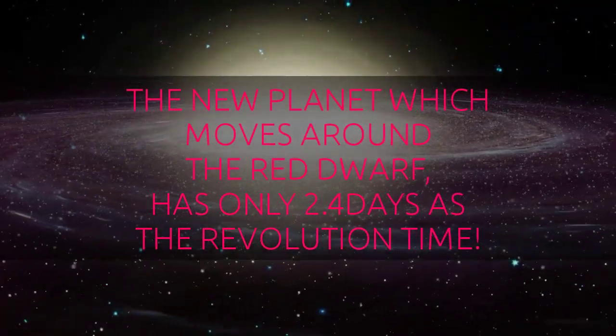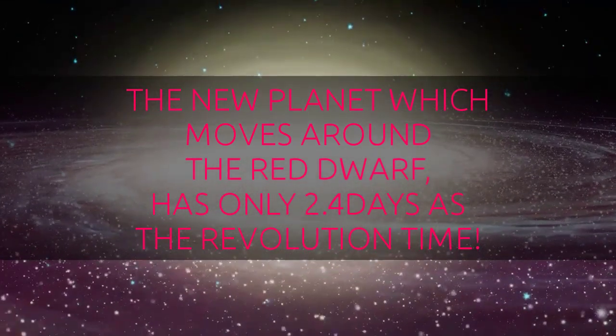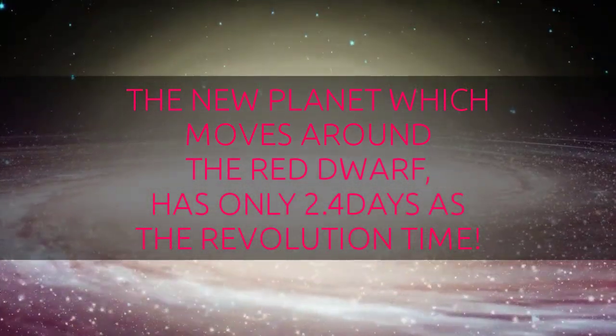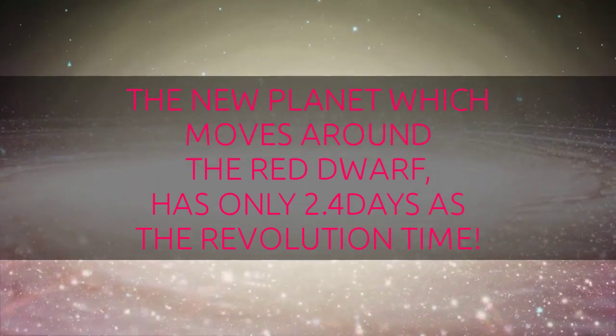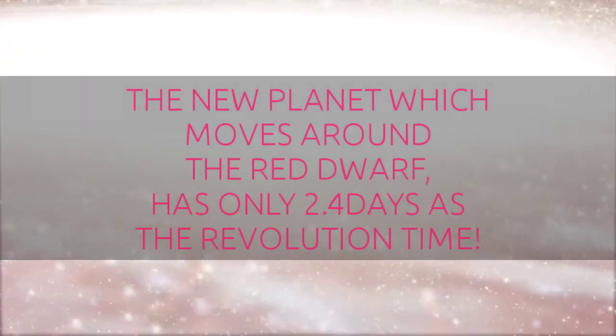The one year of this planet is just two days, nine hours, and 30 minutes. That means the time taken for the planet to complete one revolution is just 2.4 days in Earth terms. So let's come to the next topic.